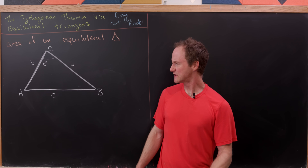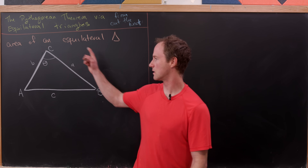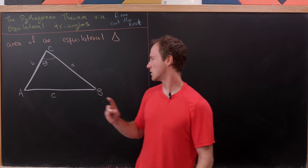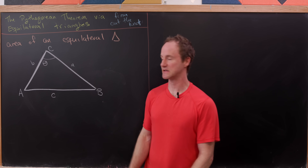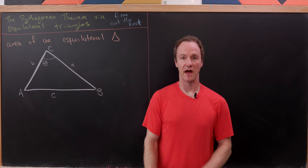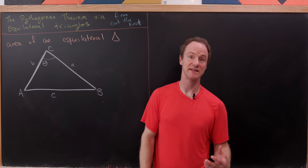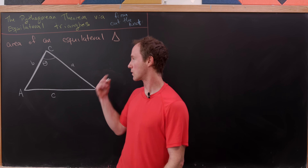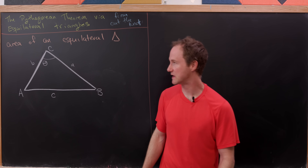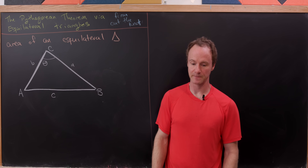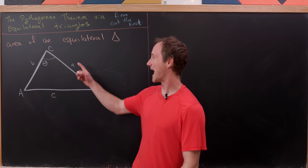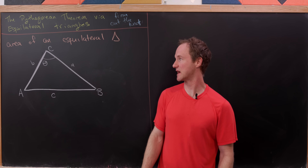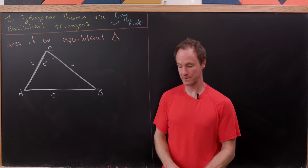Let's start with a triangle of this form. We've got vertices A, B, and C, and the sides opposite those vertices have side length lowercase a, b, and c. And then I'm going to call this angle at vertex C, theta.